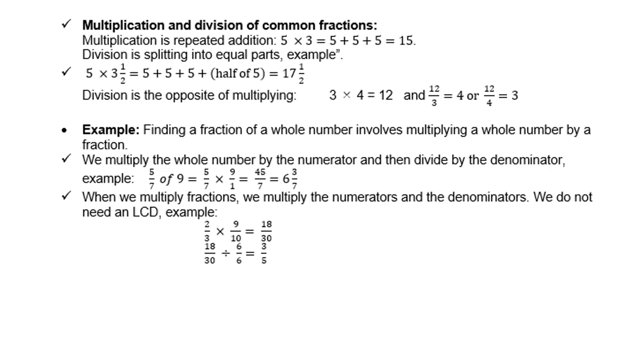Finding a fraction of a whole number involves multiplying a whole number by a fraction. We multiply the whole number by the numerator, and then divide by the denominator. Example: five over seven of nine. In mathematics, of means multiply. Nine is a whole number, so write it as nine over one. Five times nine is forty-five, and seven times one is seven, which is also six and three sevenths.